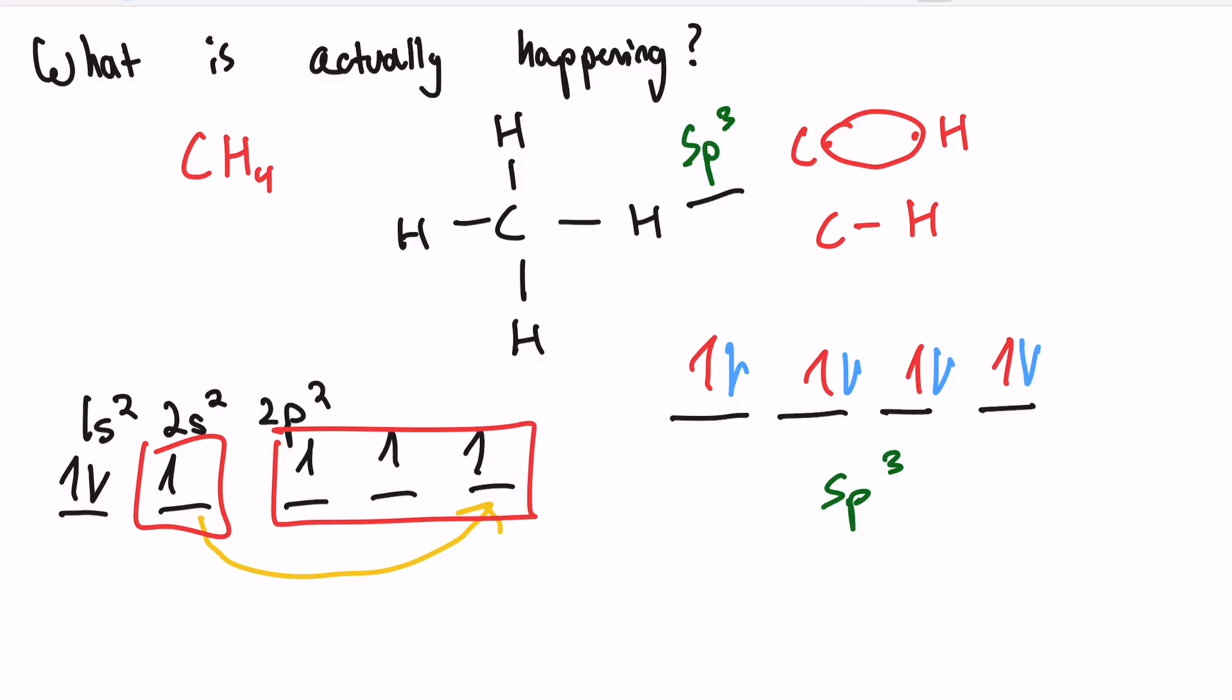And that right there is what it means when something is hybridizing. When the carbon atom is hybridizing, it is literally mixing and matching its orbitals so that it can form more favorable bonds. Because the more bonds you form, the lower your potential energy, the more stable you are. So carbon wants to form all of these bonds. So that right there is what's actually happening in hybridization.